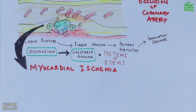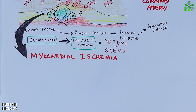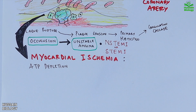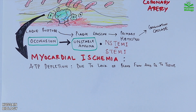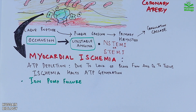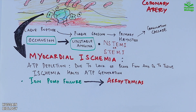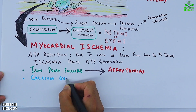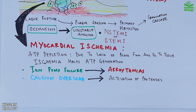With the artery blocked, blood flow is reduced and oxygen delivery to the heart tissue drops. As a result, the cells can no longer produce enough ATP. This ATP depletion has serious consequences: ion pumps in the cell membrane begin to fail, leading to arrhythmias — abnormal heart rhythms that can be life-threatening. Calcium levels also rise abnormally inside the cells, activating proteases — enzymes that start breaking down essential cell components.